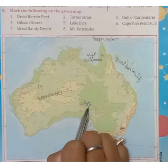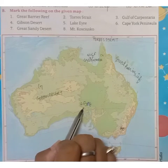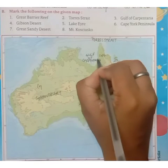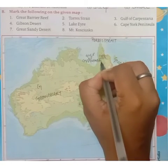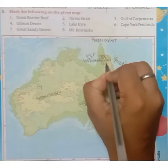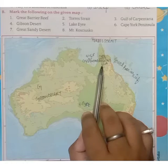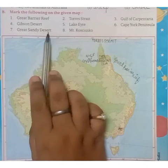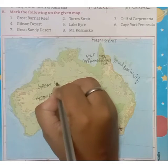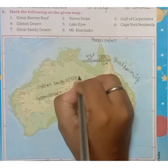Next is Cape York Peninsula. You will mark Cape York Peninsula here. You can also write it in short if there is not enough space on the map.